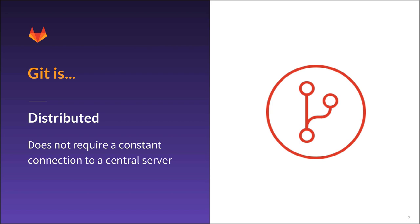First, Git is distributed. Unlike legacy centralized version control systems, Git does not require a connection to a central server in order for you to work on your project.